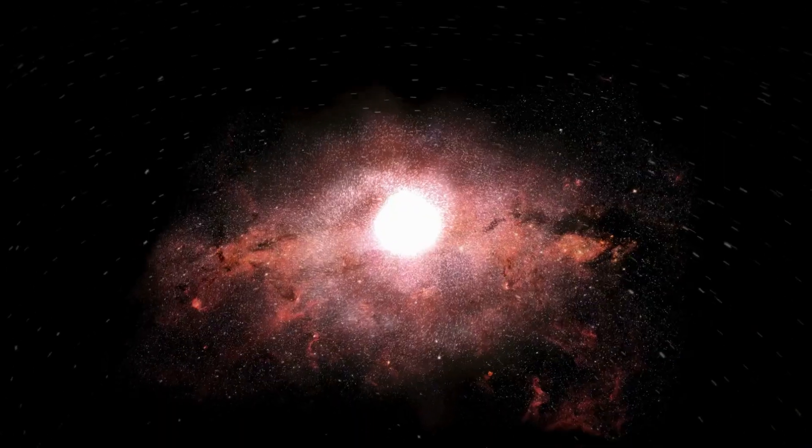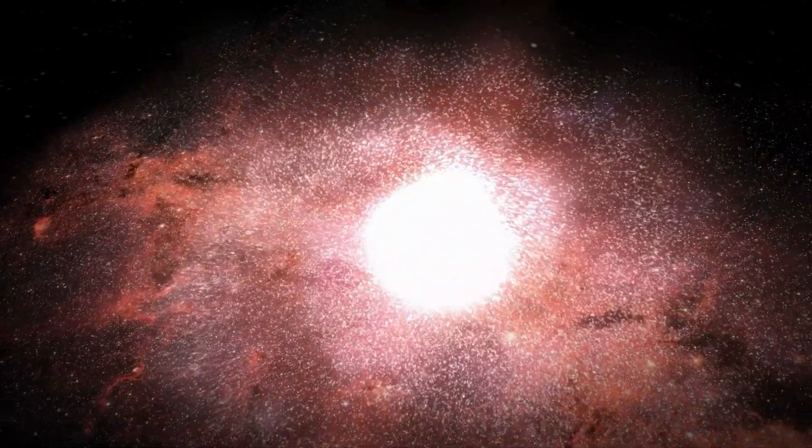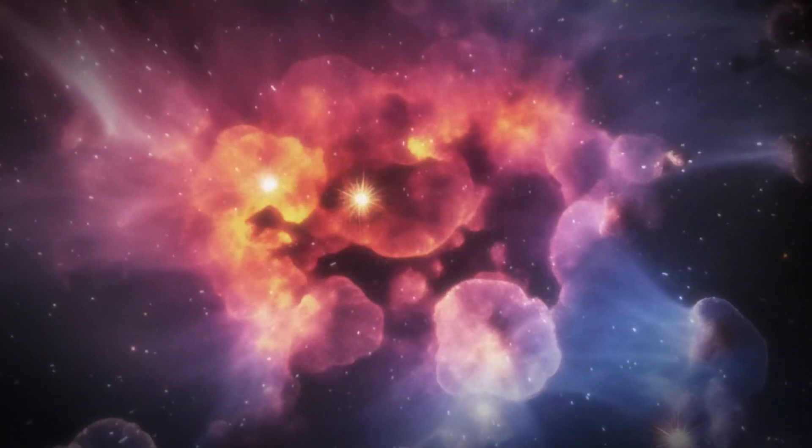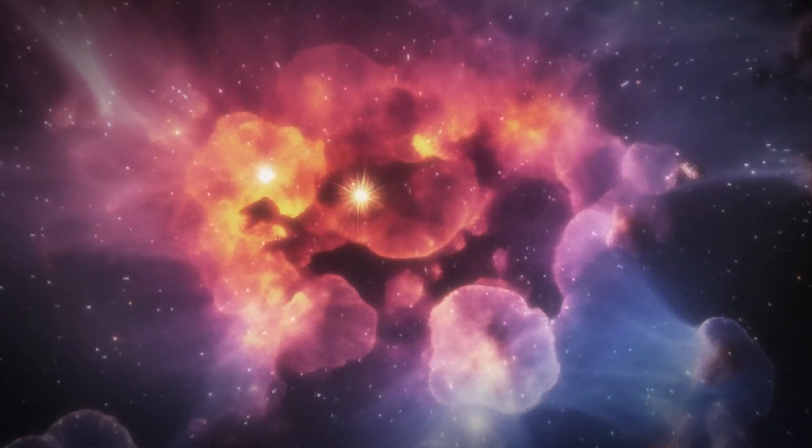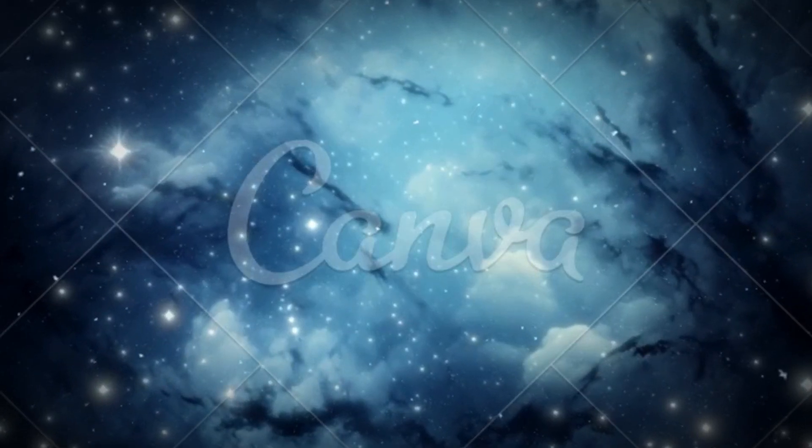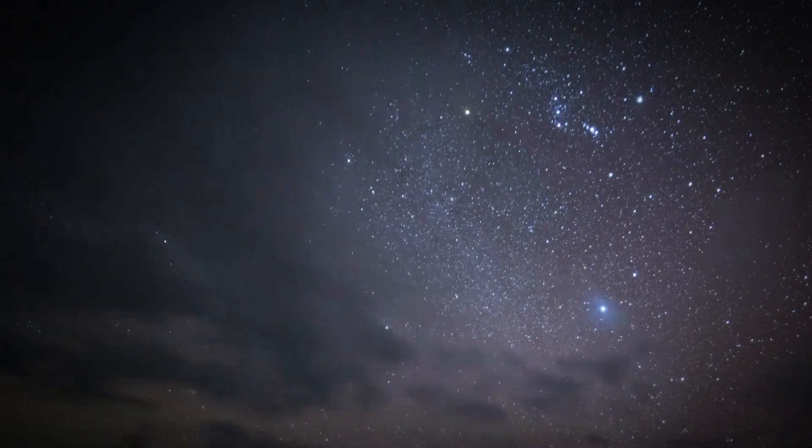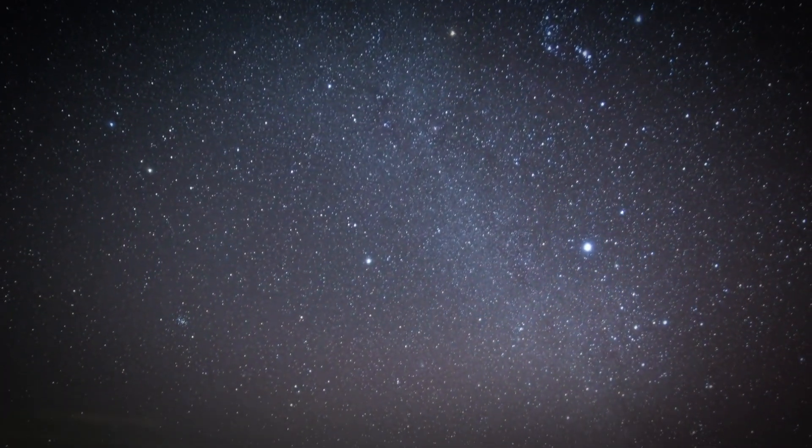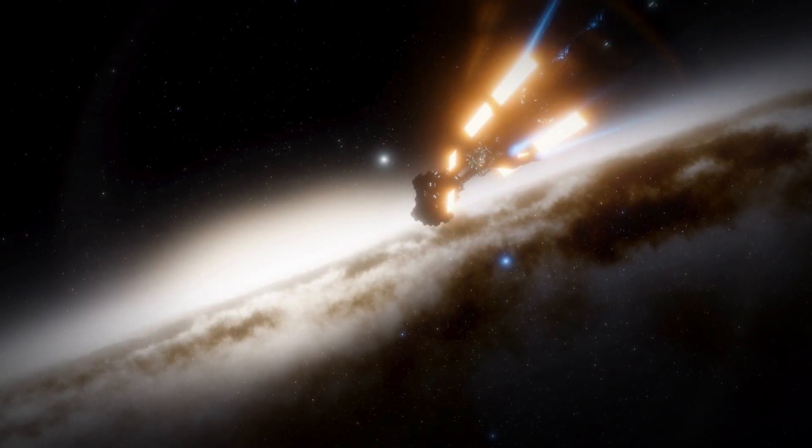Betelgeuse, also referred to as Alpha Orionis, is typically the 10th brightest star in the night sky and the second brightest star in the Orion constellation, indicating the hunter's right shoulder. This red giant star is unique among the prominent stars in Orion, which are mostly bright, young blue giants or supergiants.